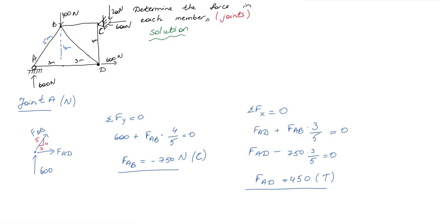If I write equilibrium equation for y direction, I have positive 600 plus y component of FAB which is equal to FAB times 4 over 5, and the sum of them needs to be 0 in order to be in a state of equilibrium. So from here I get FAB as minus 750 Newton, which tells me that this joint is subjected to compression.